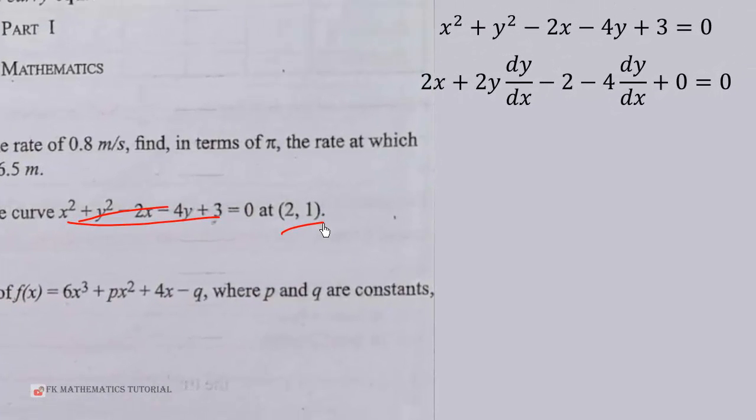Given the equation of the circle we can differentiate implicitly. So differentiate x squared get 2x. Differentiate y squared get 2y dy/dx. Then differentiate minus 2x we get minus 2, minus 4 dy/dx. Recall that as we are differentiating with respect to x, if we differentiate y we need to indicate that it is actually a differentiation of y with respect to x. That is what you are seeing in both points over here.